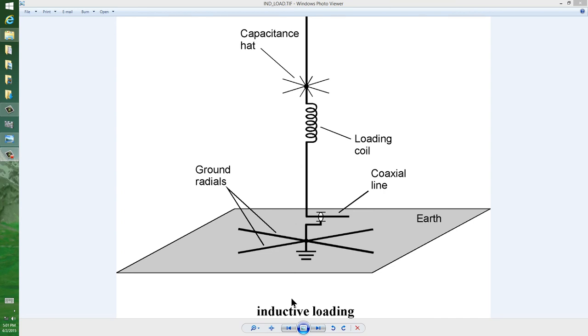And that is commonly used in amateur radio practice today, particularly with quarter wavelength ground-mounted vertical antennas like this.